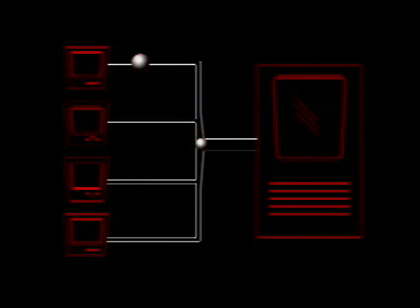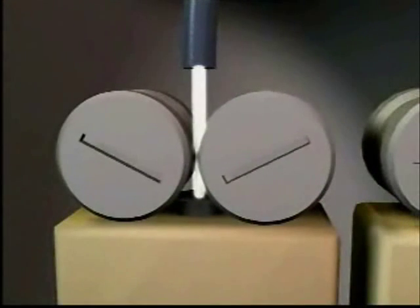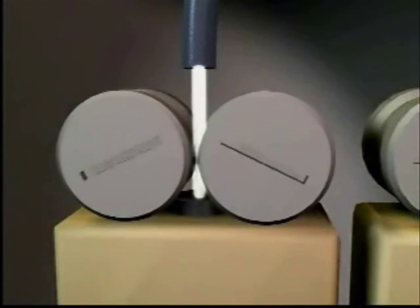Once the tool paths controlling the XY movements have been generated for all layers, a file is created and sent to the FDM machine. Inside the heated build envelope, the model material in filament form is heated to a less viscous state for extrusion. The model is built layer by layer from the bottom up. On each layer, the extrusion tips follow the tool paths calculated in the computer.